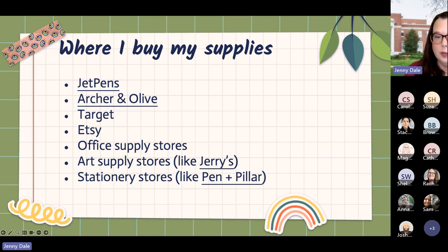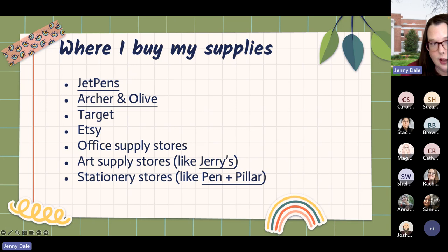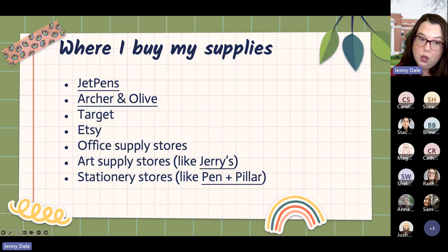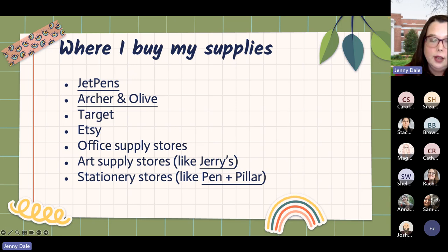Here are some of my favorite places to buy supplies — I'll get the link to this slideshow to you in a minute. Jet Pens is my number one favorite, a great place to buy all kinds of things. Archer and Olive is where I get my personal journals — they're expensive but fancy with really nice 160 GSM paper, which is very thick. I also get lots of stuff at Target, Etsy, office supply stores, art supply stores, Jerry's — I get a lot of pens from there. Cute stationery stores like Pin and Pillar in High Point — they also make bullet journals with dot grid paper, which is what I prefer.